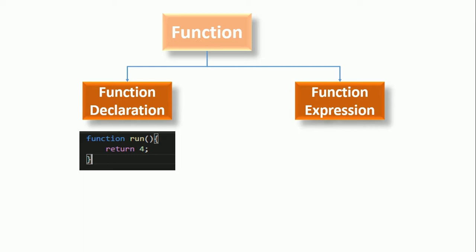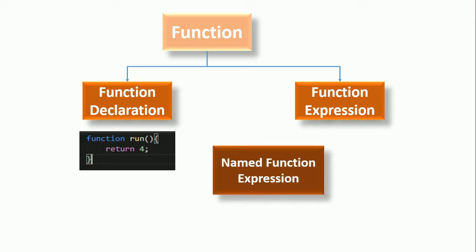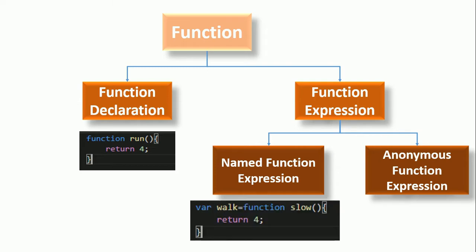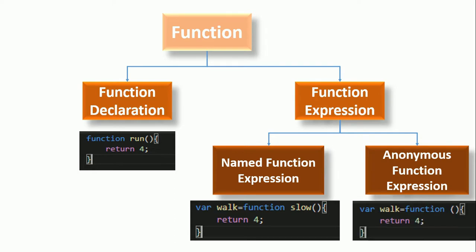Function expression is subdivided into two types: named function expression and anonymous function expression. In a named function expression, a named function is assigned to a variable — here, a named function 'slow' is assigned to a variable named 'walk'. In an anonymous function expression, a function without any name is assigned to a variable named 'walk'.